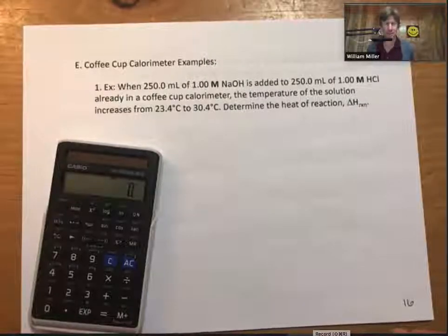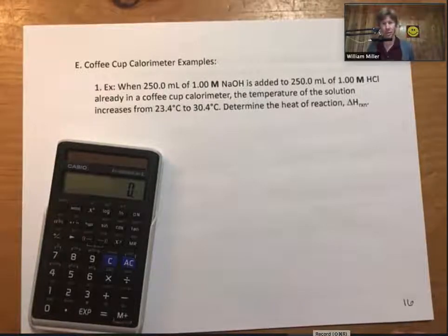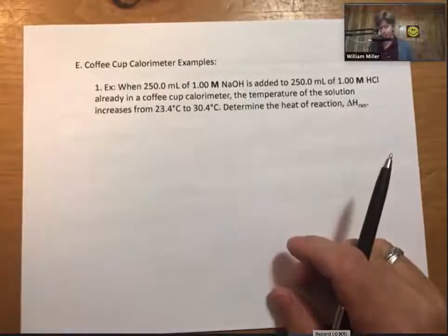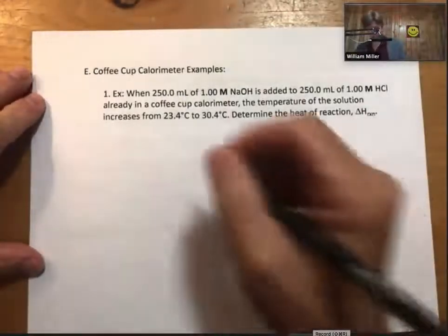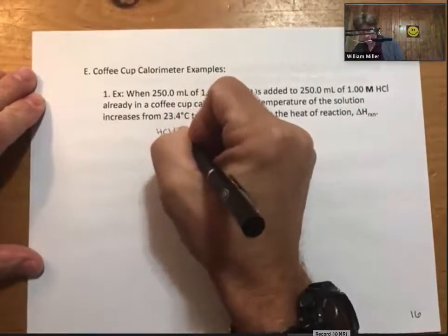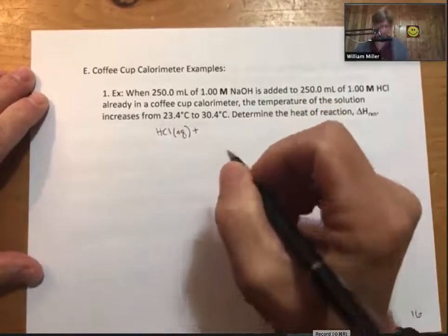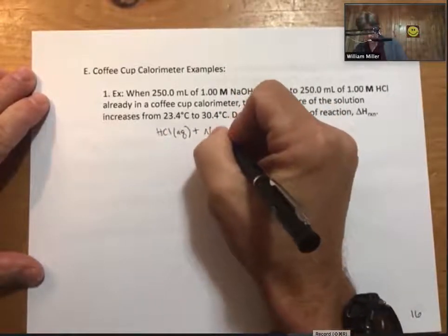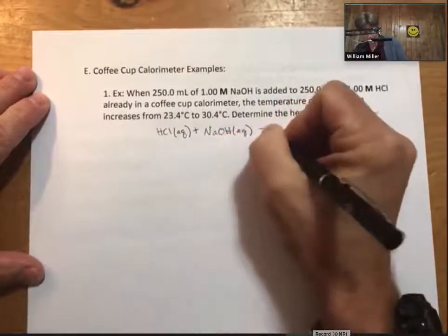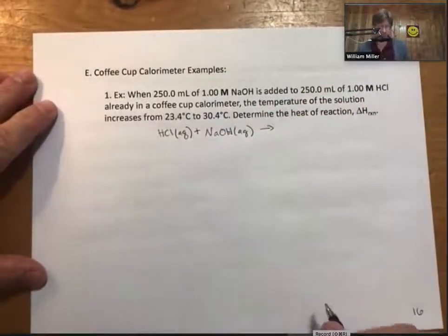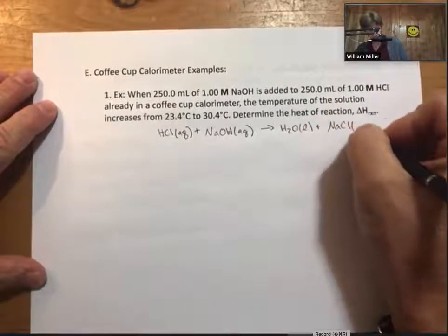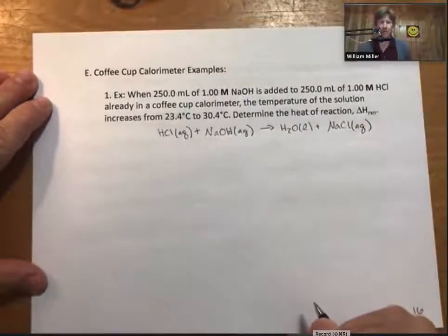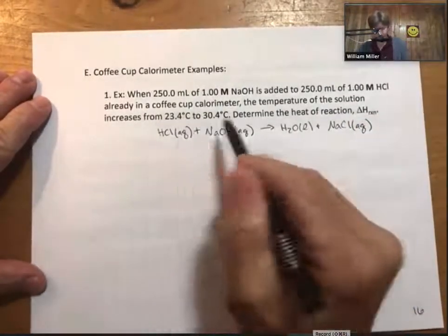For the coffee cup calorimeter examples, we'll start with this one in which we are mixing sodium hydroxide and hydrochloric acid. We have our calculator and we need to know the reaction. The reaction is a very familiar one - if this were an exam, the reaction would be given.